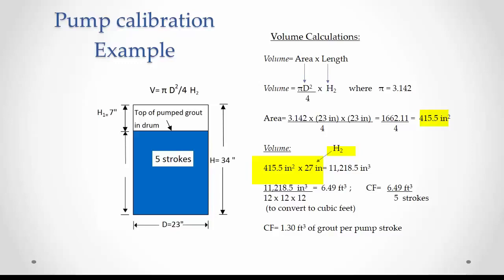This area multiplied by the height H sub 2 of 27 inches is 11,218.5 cubic inches.